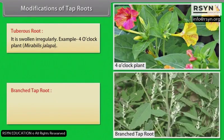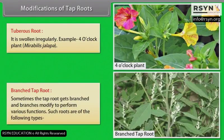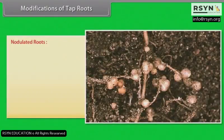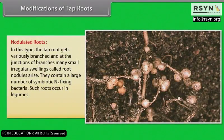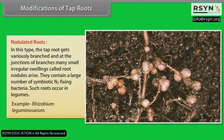Branched tap root: Sometimes the tap root gets branched and branches modify to perform various functions. Nodulated roots: In this type, the tap root gets variously branched and at the junction of branches, many small irregular swellings called root nodules arise. They contain a large number of symbiotic nitrogen-fixing bacteria. Such roots occur in legumes. Example: Rhizobium leguminosarum.